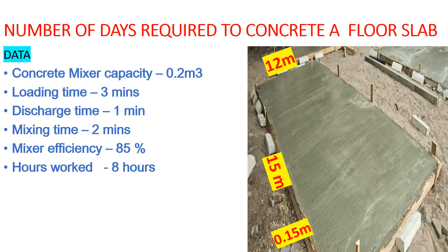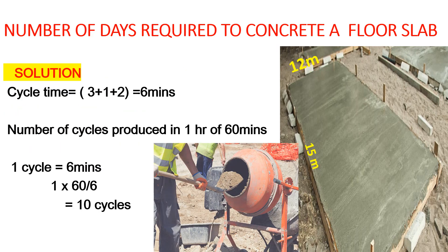Now let's find the cycle time. Cycle time is the time taken to produce one batch — the act of loading, mixing, and discharging is one cycle. We had a loading time of 3 minutes, discharging time of 1 minute, and mixing time of 2 minutes, giving a total of 6 minutes per cycle. To find the number of cycles per hour: 60 minutes divided by 6 minutes per cycle equals 10 cycles per hour. In one hour of effective working, this mixer produces 10 batches.